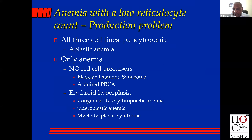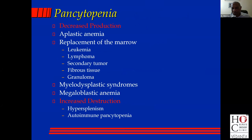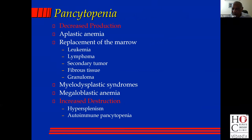Suppose you have all three cell lines down — pancytopenia. If it's decreased production, there are only a few causes. One: bone marrow is empty — aplastic anemia. Two: the bone marrow has been replaced by something that shouldn't be there — leukemia, lymphoma, secondary tumor, fibrous tissue, or granuloma. Any of these things replacing the marrow when you have pancytopenia.